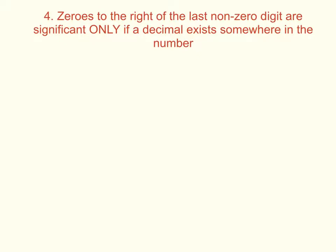The last rule for identifying sig figs is zeros to the right of your last non-zero digit are significant only in certain situations. Essentially, there must be a decimal in the number somewhere. It doesn't have to fall after that zero. It just has to be in the number anywhere. For example, say the number 100. Without a decimal point, this has one sig fig.